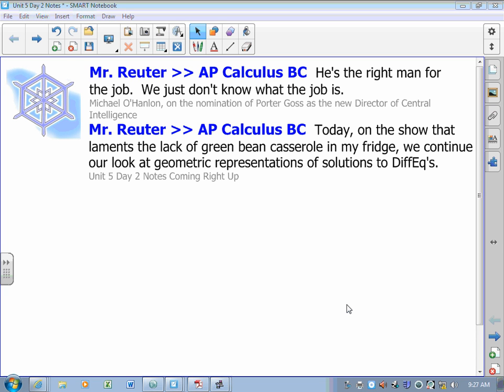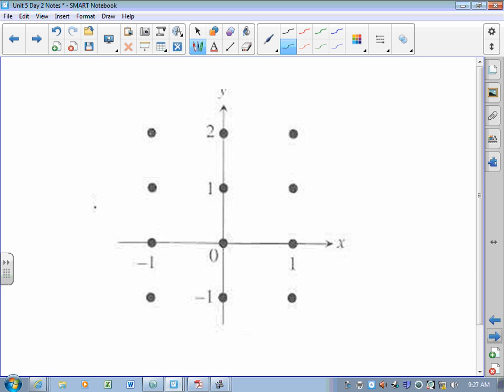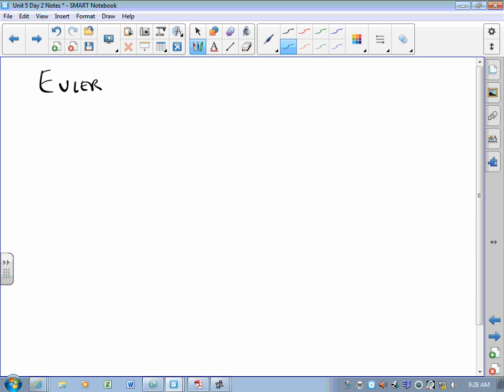Lesson 2 in Unit 5 piggybacks off the ideas in Lesson 1 where we looked at solutions to differential equations using geometry. Now we're going to use numerical analysis. We're going to take a look at solutions to differential equations. We're still going to use a lot of geometry. Today we just use analytic geometry using something called Euler's method.